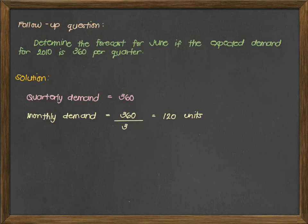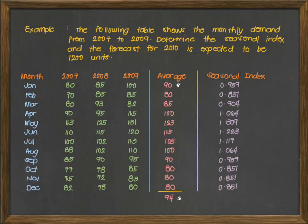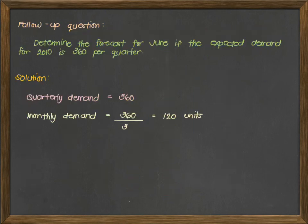If we will be going back to our data kanina for our seasonal index, for us to compute for the forecast for June, here is the seasonal index. For June, we have 1.223. Solving for the month of June, we have 120 times 1.223, which gives us 146.76 or roughly equivalent to 147 units. That is how we forecast using seasonal index.